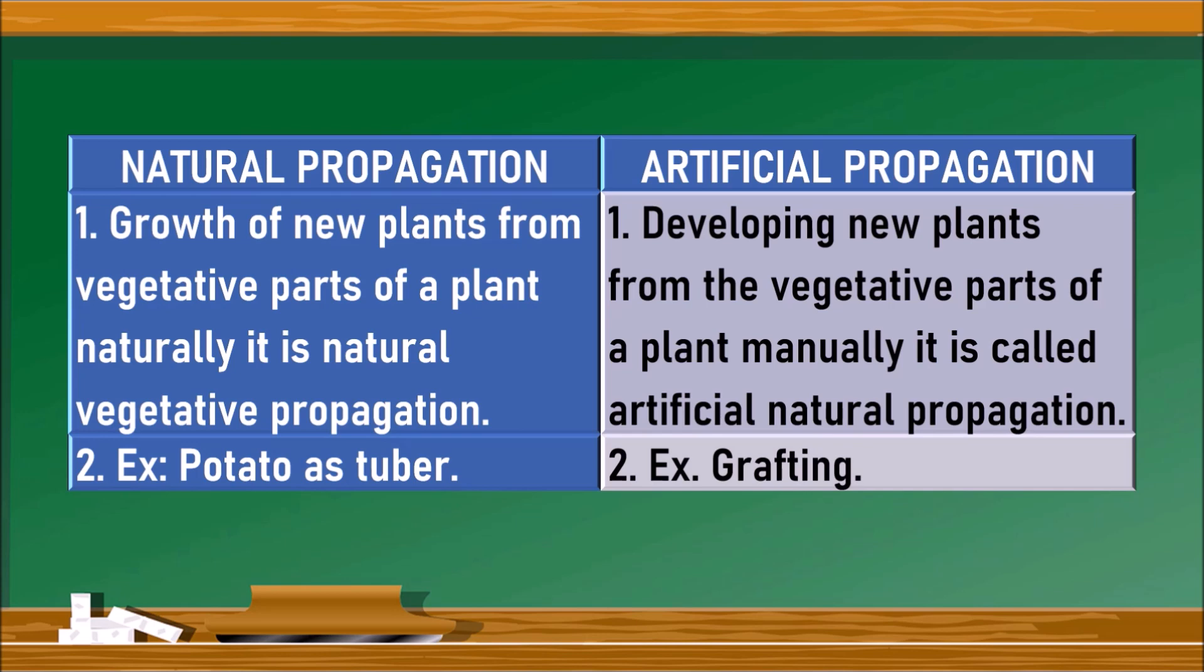The new plants grow from the vegetative parts by its nature. But artificial propagation refers to developing new plants from vegetative parts of a plant manually. The example for natural propagation is potato as a tuber, carrot, and also ginger. All these are examples for natural propagation.